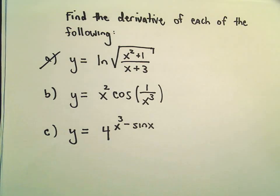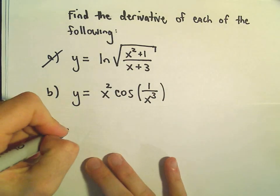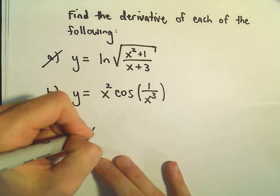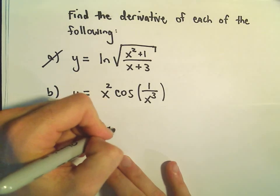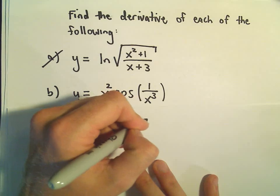So another derivative problem here, and this time we've got x squared times cosine of 1 over x cubed. The first thing I'm going to do is rewrite this. I'm going to rewrite 1 over x to the third as x to the negative third.